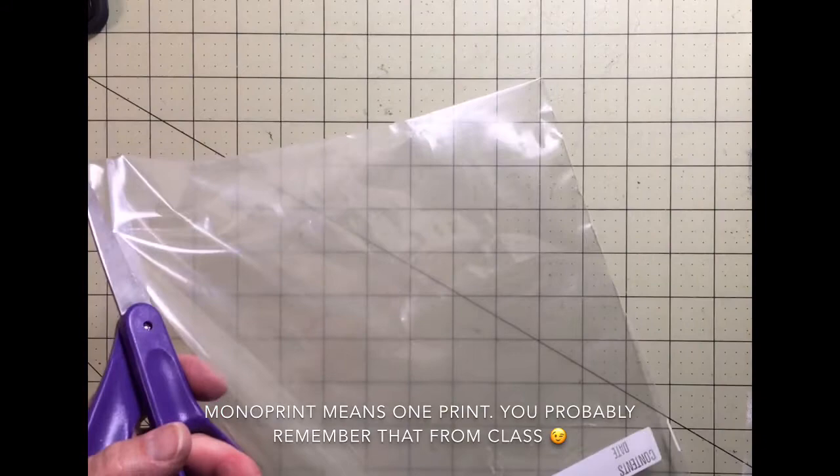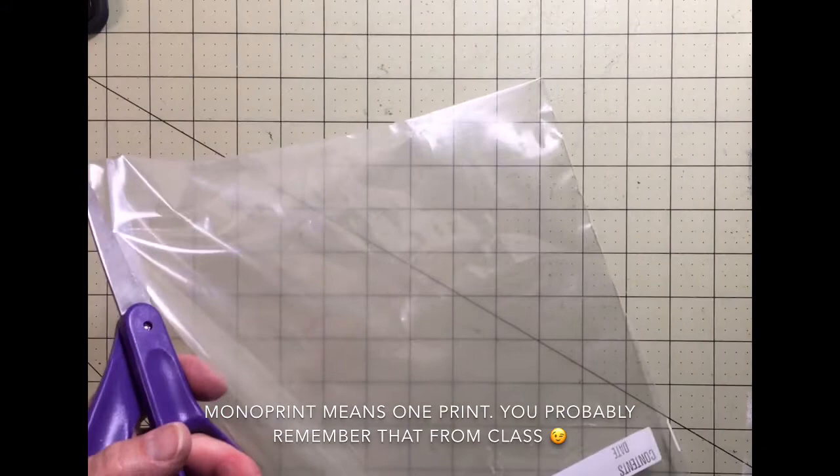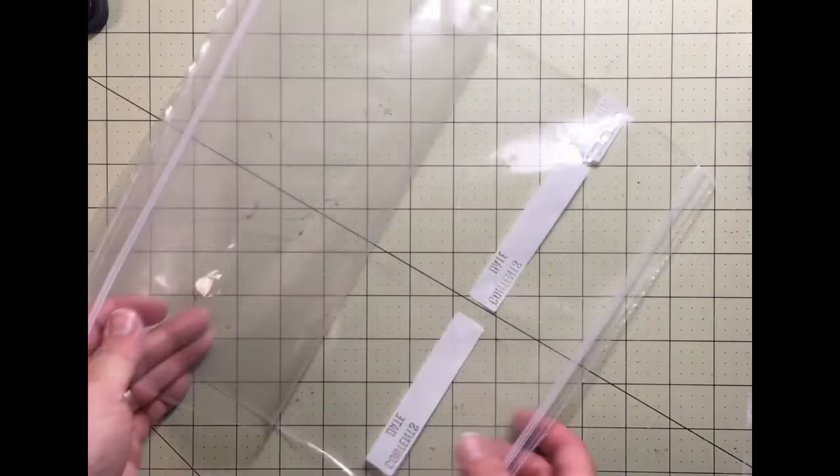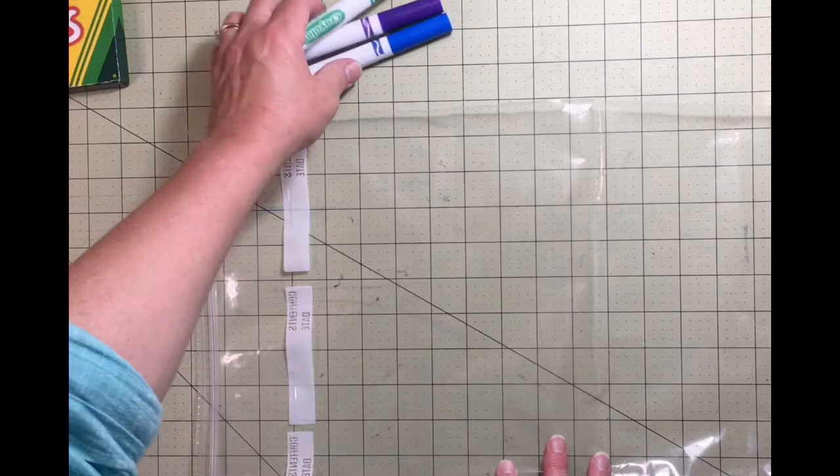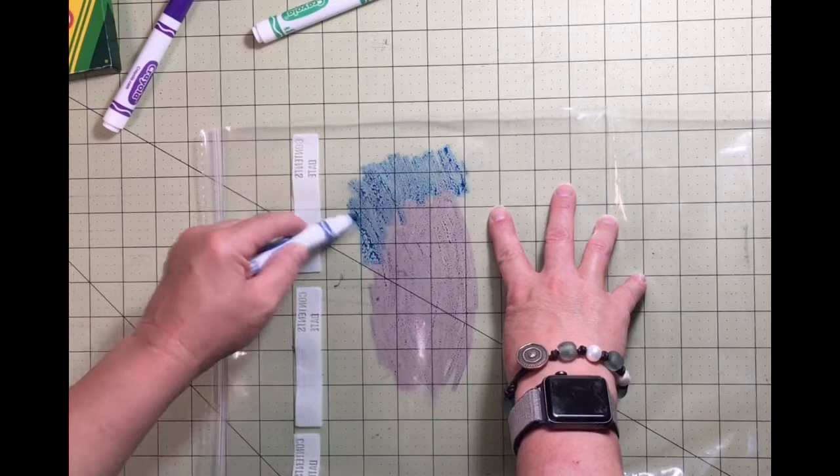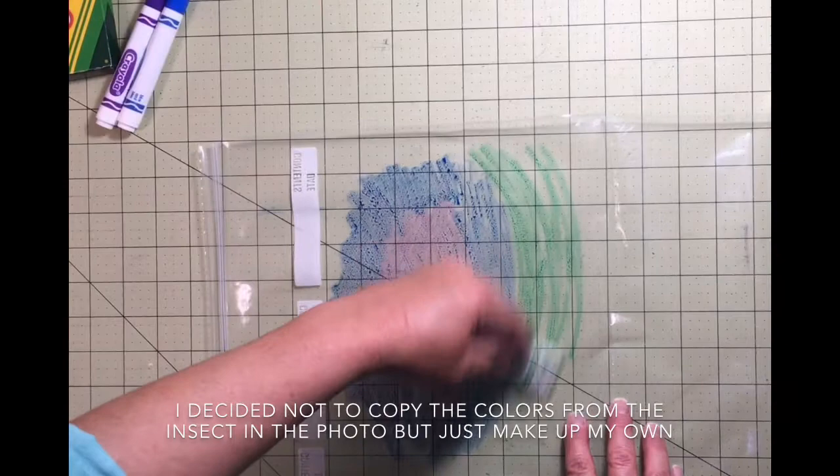Okay, now for the monoprint. Take your Ziploc baggie and cut it down the sides. You need to be able to open it up flat. Now for your colors, I'd recommend maybe three or four, and you're going to color just on one half of your Ziploc baggie. You can apply the color however you want. I'm making mine kind of a bullseye with three colors, purple, blue, and green.